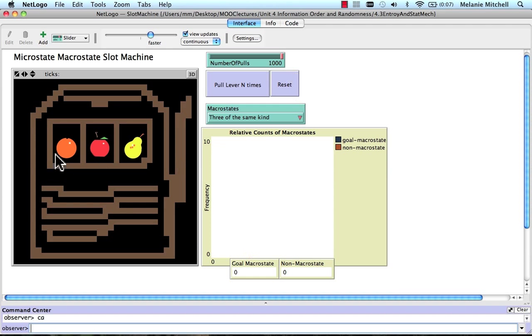We have our three windows with our fruits, and I can set a number of pulls that I want. I'm going to set it to one to start off with, and click on Pull Lever N Times.